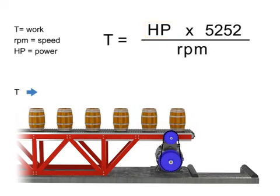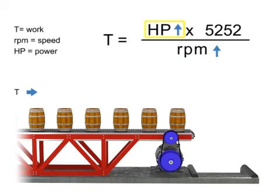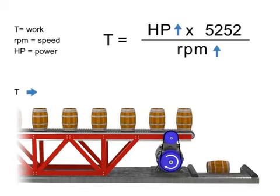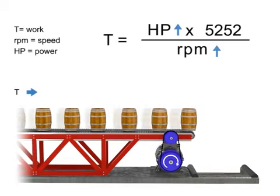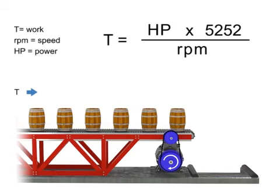Let's say we wish to keep torque constant, but want to increase the production of barrels. If the torque, or number of barrels, on the conveyor belt remains constant but speed increases, then the horsepower of the motor also increases. In other words, a more powerful motor is required to produce the same amount of torque more quickly. Similarly, the opposite is true: if we wish torque to remain constant and decrease speed, then the horsepower of the motor also decreases.